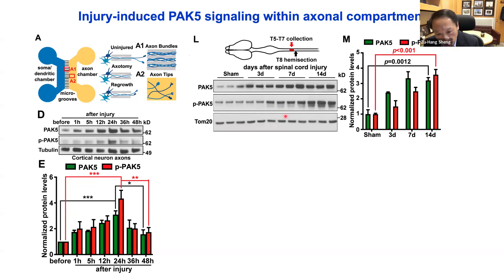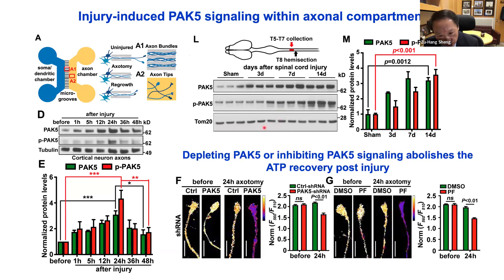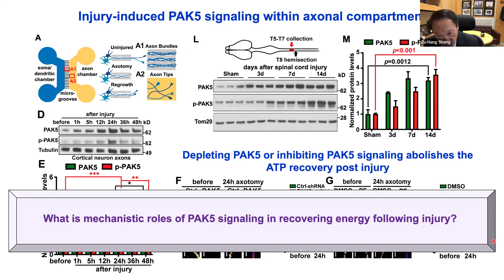We examined whether PAC5 signaling is required for axon energy recovery after injury using two strategies. First, depleting PAC5 expression by siRNA abolished recovery of ATP levels at axon tips at 24 hours post-injury. Second, using a chemical compound to specifically inhibit PAC5 activity also suppressed ATP level recovery at 24 hours after injury compared to DMSO control. These studies confirm that injury activates PAC5 and this activation is required for energy recovery.